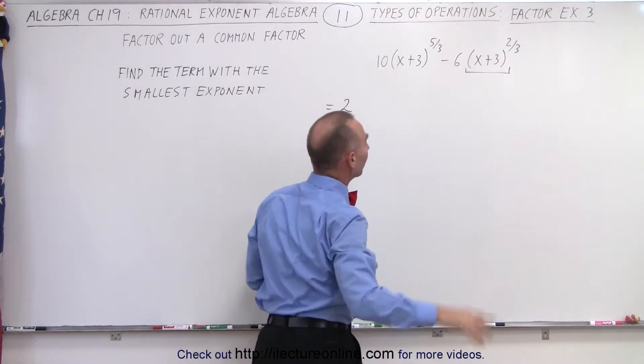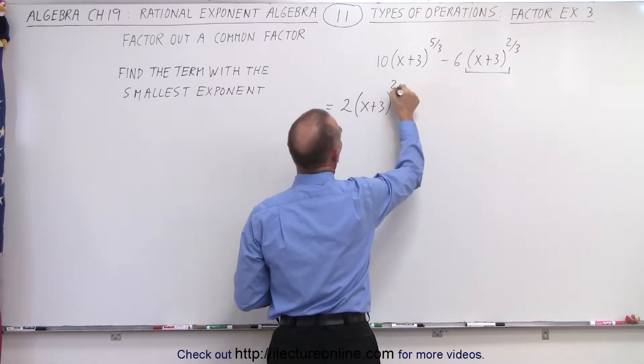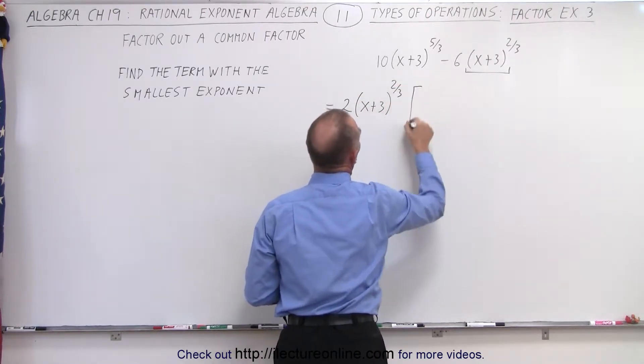I also need to factor out (x+3)^(2/3). (x+3)^(2/3), and then what do we have left?